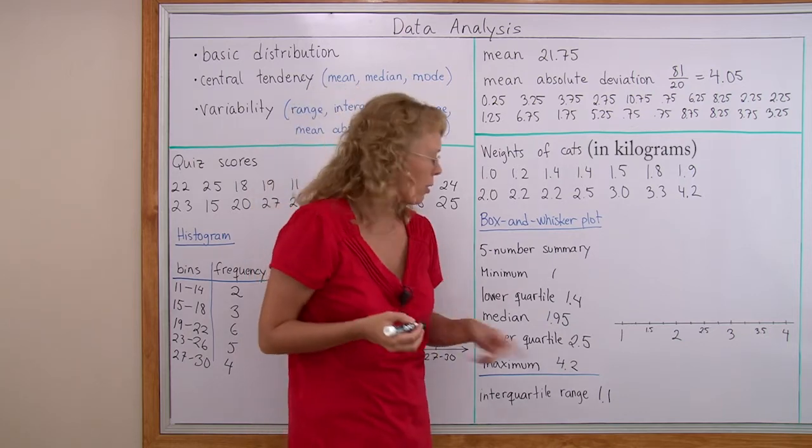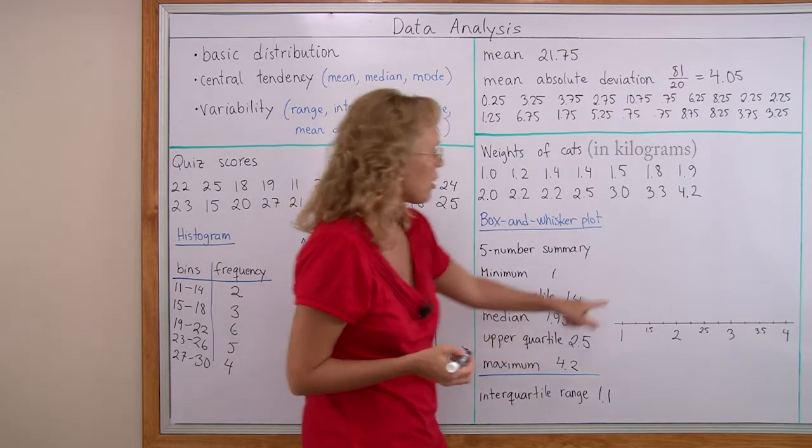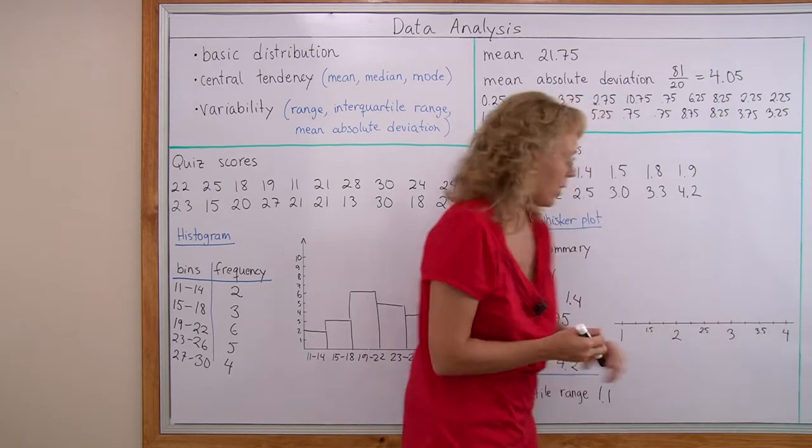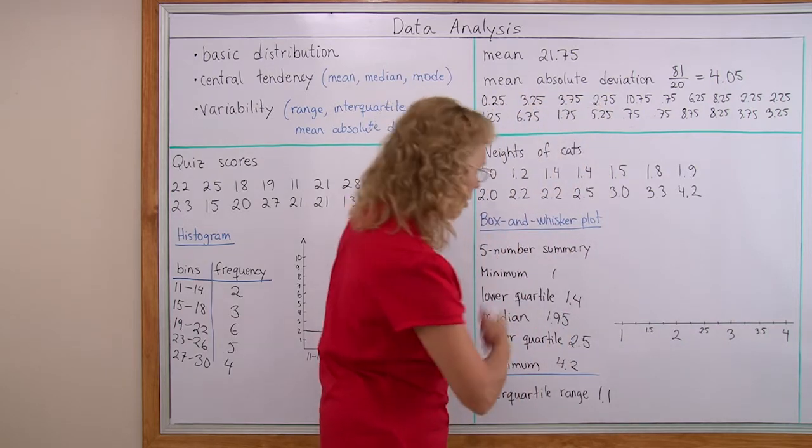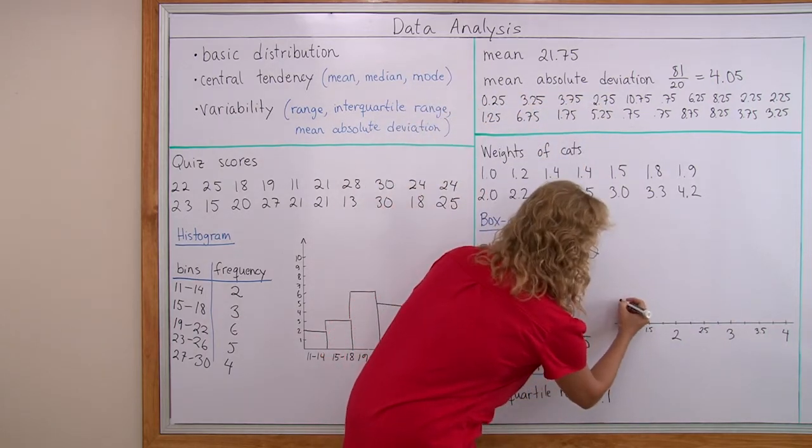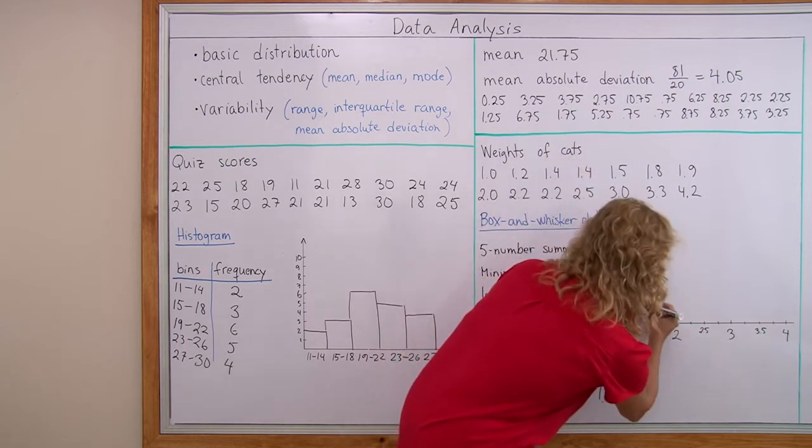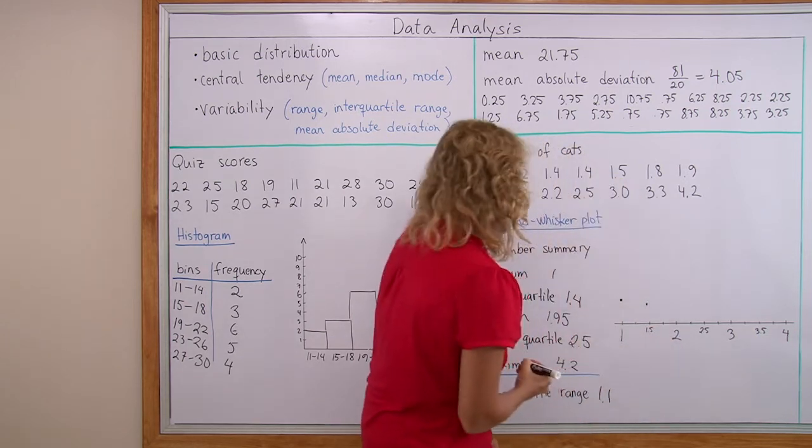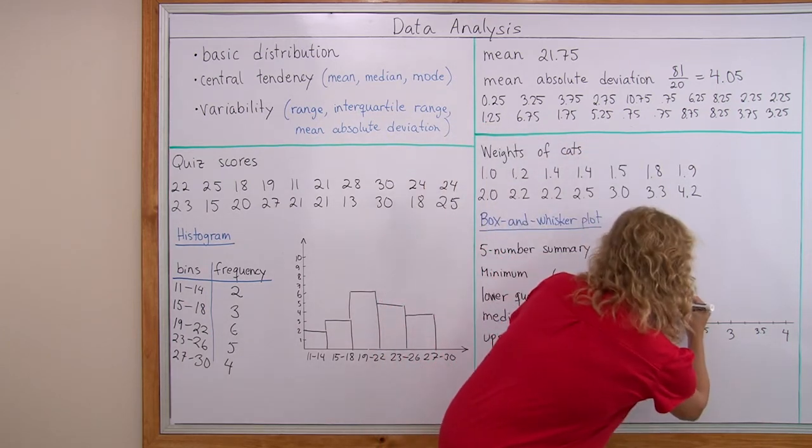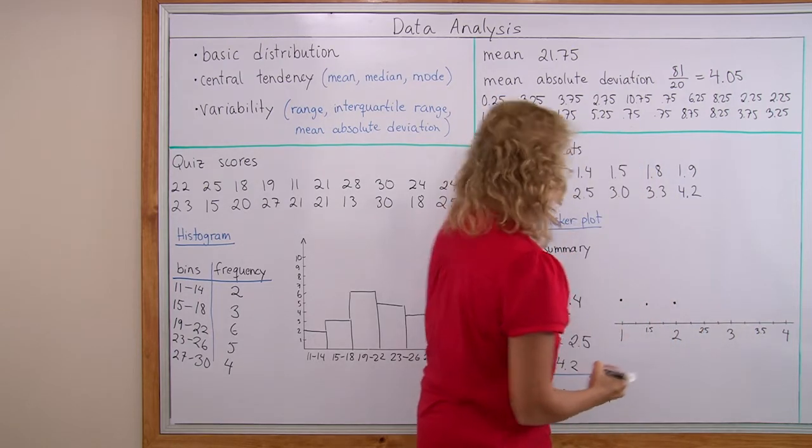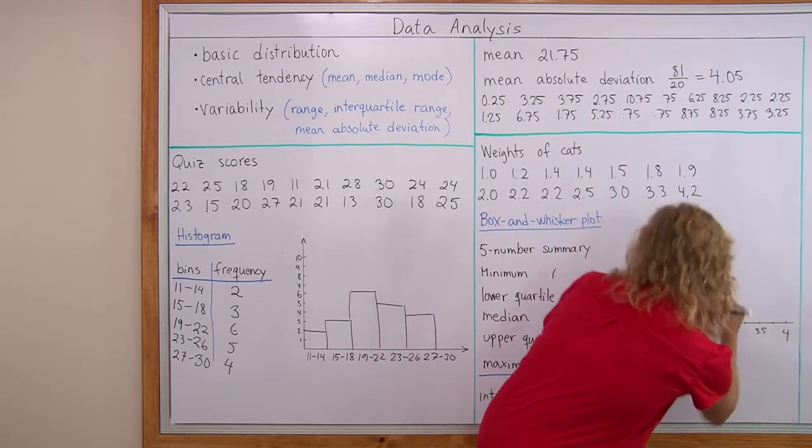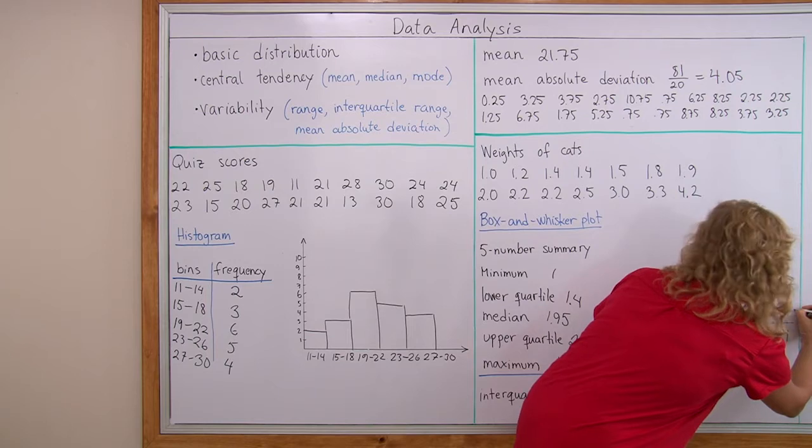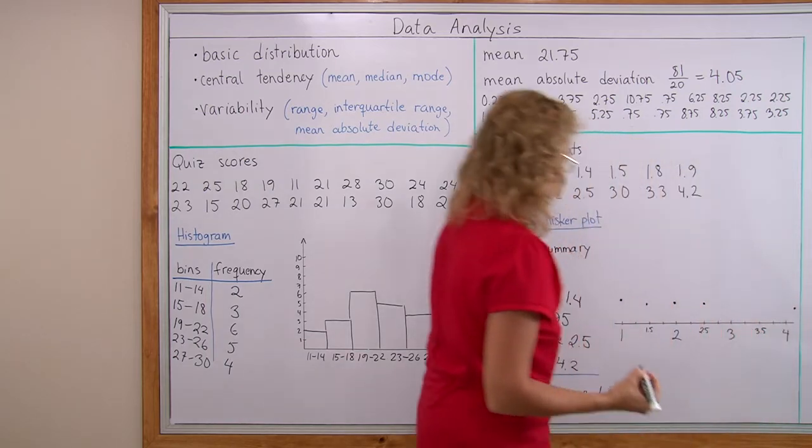And now to draw the box plot I take these five numbers and draw them as dots here, above my number line. So 1, 1.4, 1.95, 2.5 and 4.2 somewhere here.